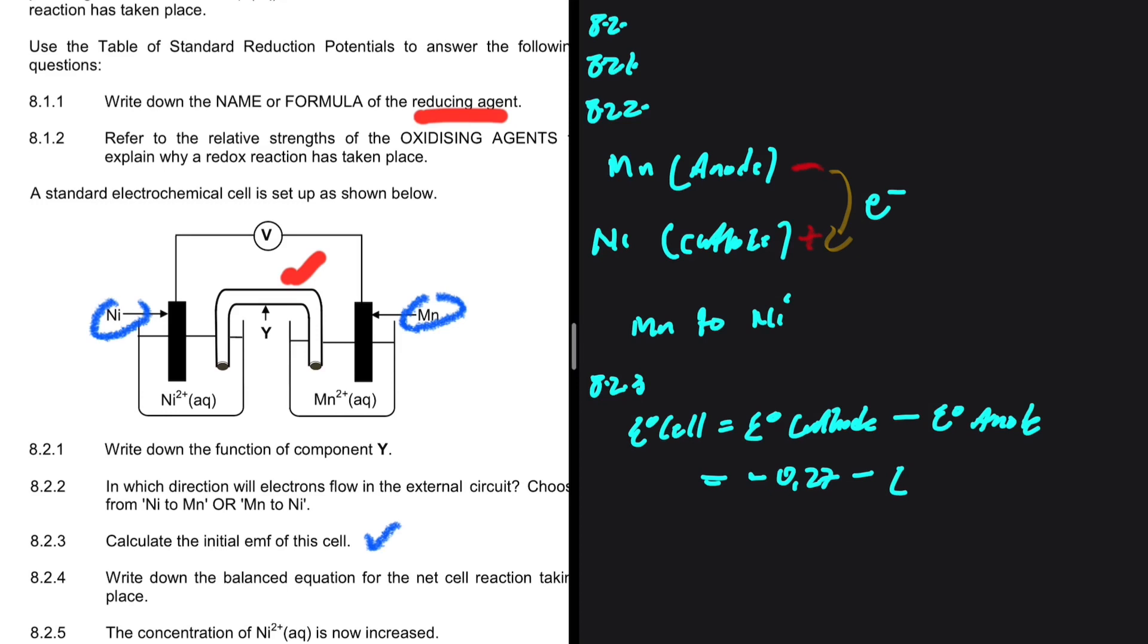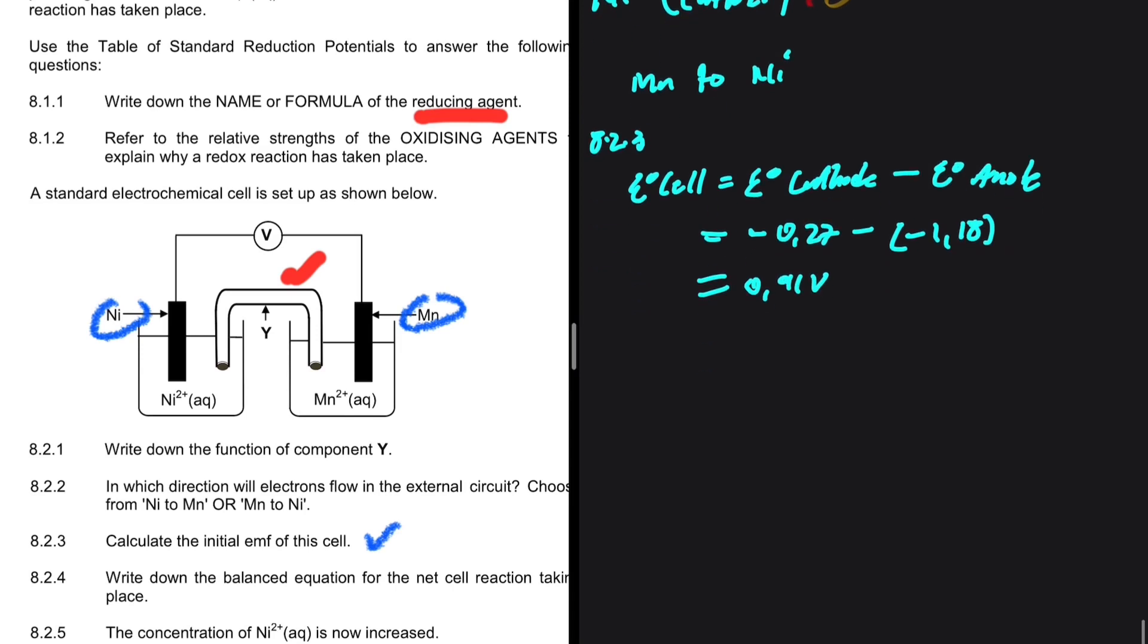At the cathode, we have Ni with a reduction potential of -0.27 minus the reduction potential at the anode where we have Mn, that is -1.18. If you put that in your calculator, it will get 0.91 volts. This is quite an easy one.